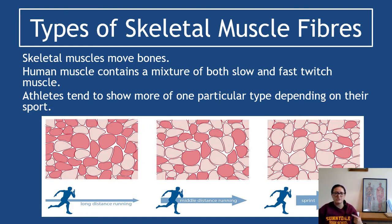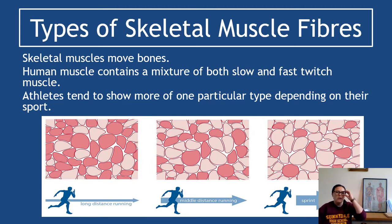Something to get into your head is the idea that there are different types of muscle. There's cardiac muscle, smooth muscle, and skeletal muscle as examples. Skeletal muscles move bones — that is their purpose. Human muscle tends to contain a mixture of both slow and fast twitch muscle, which we'll look at in more detail.